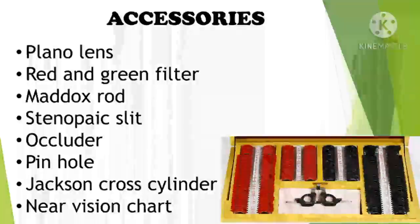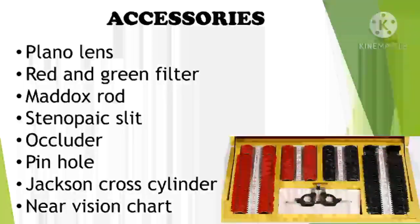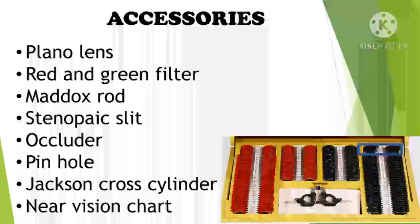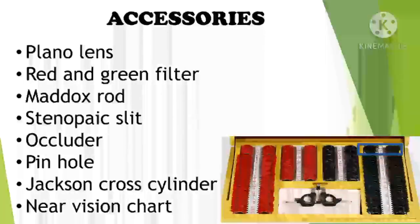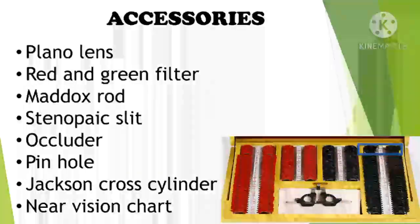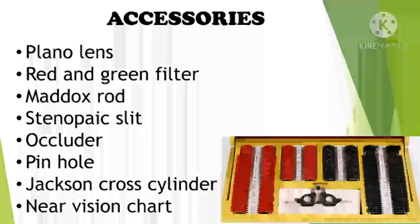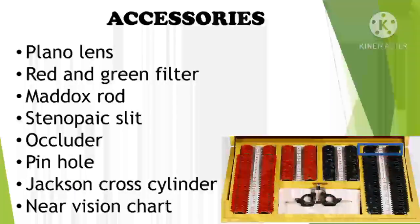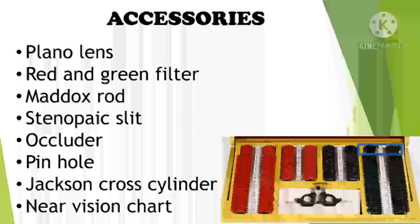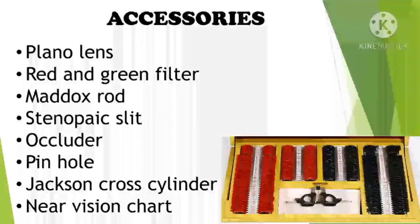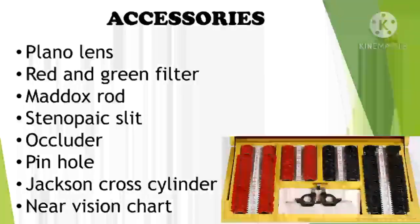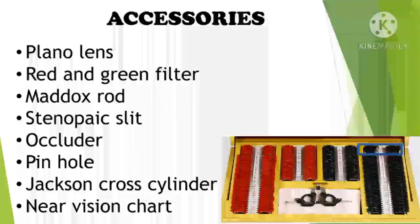The trial box also contains accessories in addition to spherical lenses, cylindrical lenses, and prisms. These accessories include: Plano lens, Red and Green filter, Maddox rod, Stenopeic slit, Occluder, Pinhole, Jackson Cross Cylinder, and Near Vision chart.